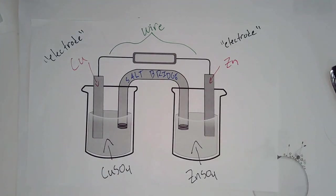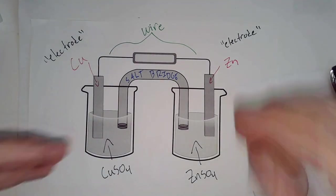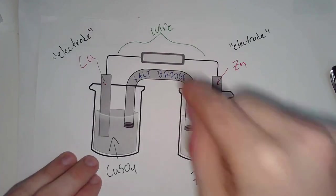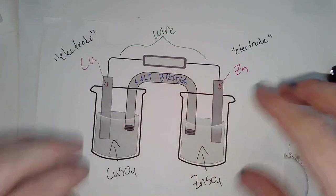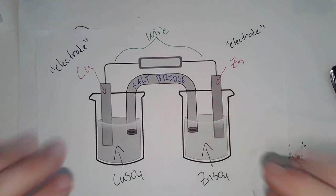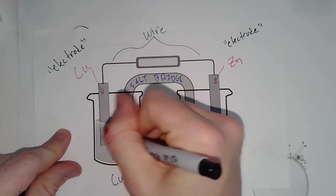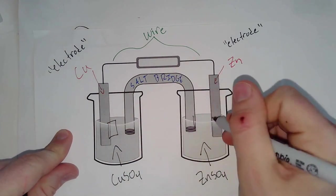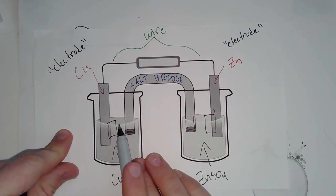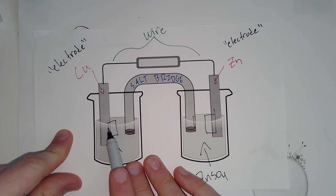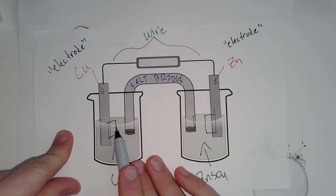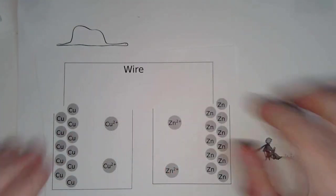And to understand what's really going on and to really understand the big question today, which is why is electricity flowing through this wire? Why, with no external power source, why does this thing make electricity? We need to look really carefully at what's actually going on. So what I want to do is I want to zoom in really tight at this area right here, right at the interface between this electrode and its electrolyte.